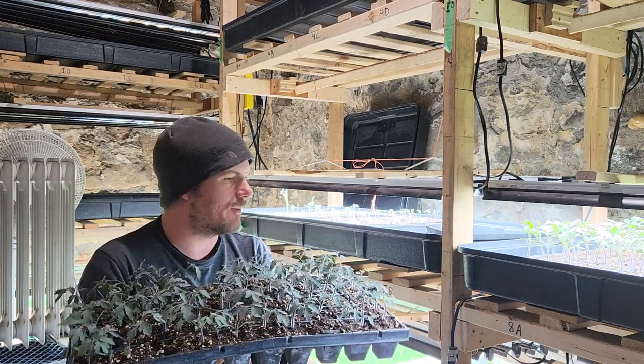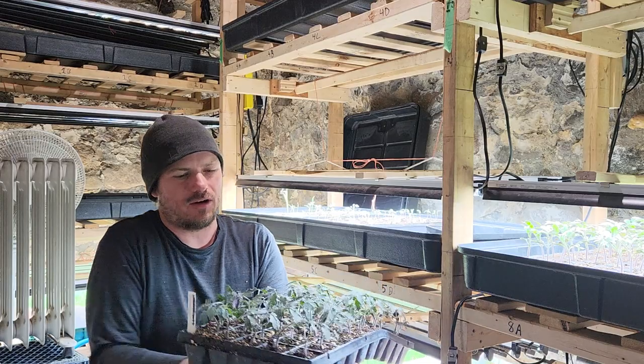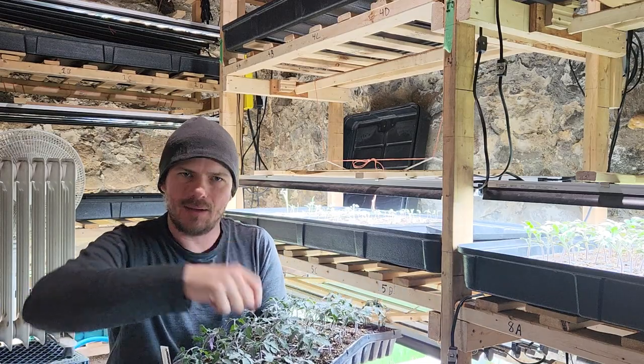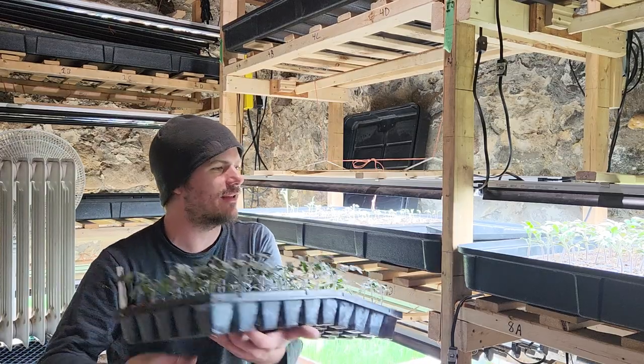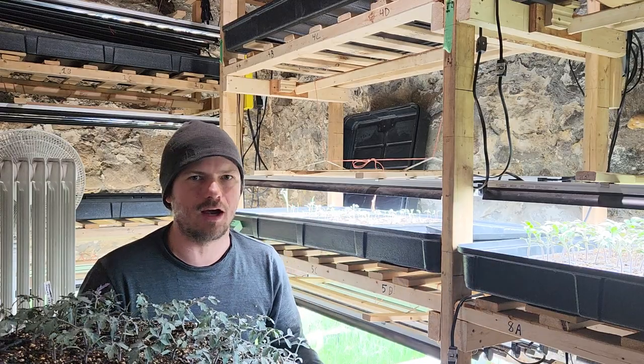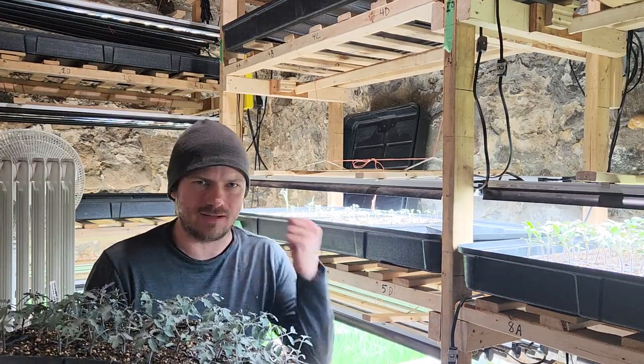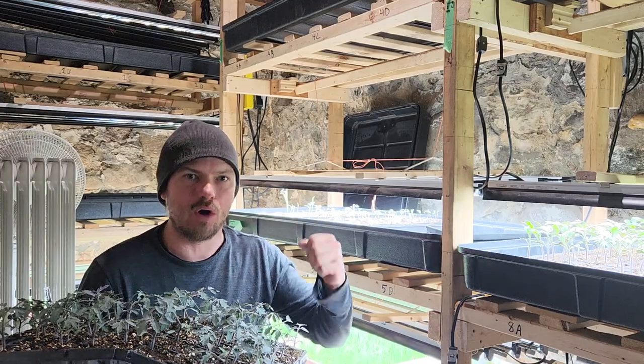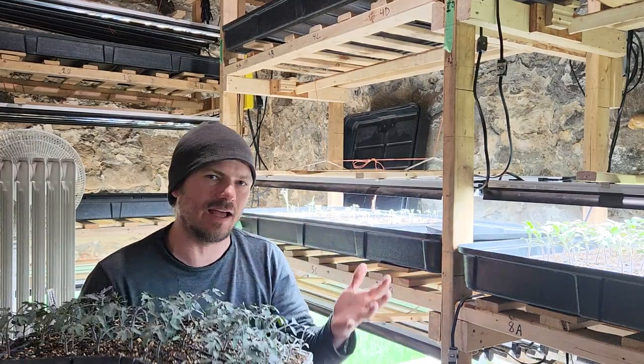But what I do is I pot them up into four inch pots. So when these plants start being about this tall, I'm going to pot them into a four inch pot that has a higher fertility mix. So it's going to be a mix of one third compost, two thirds potting mix. So that way it's got a little bit more nutrition. It can grow. And also it has more space, both for the roots and for the light.